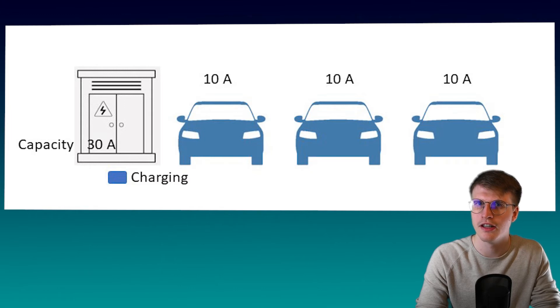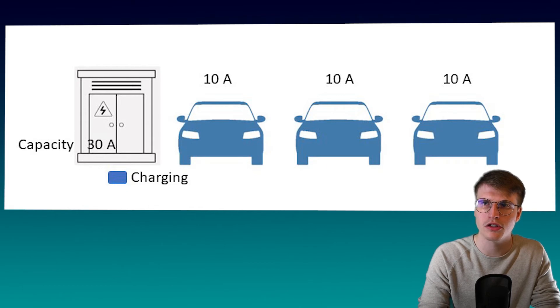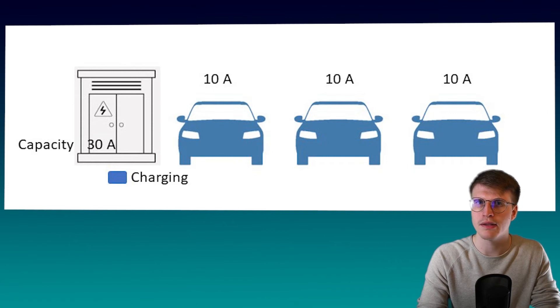However, because the station only has 30 amps available, so not enough current to supply each car with the 16 amps, we now divide the current evenly. This means that we try to distribute the current as evenly as possible among all the cars. In this case, each car gets 10 amps. We have used the entire 30 amps and each car charges with the maximum current possible for the station.